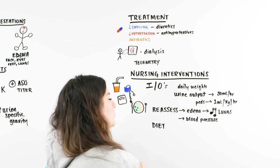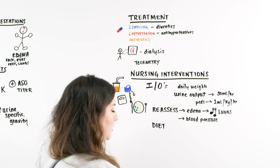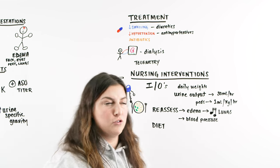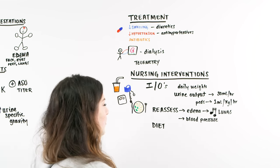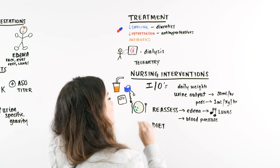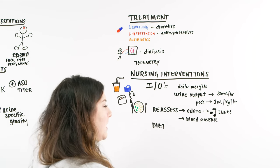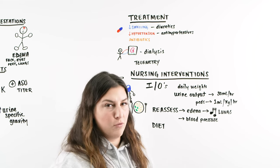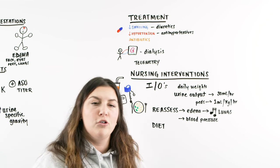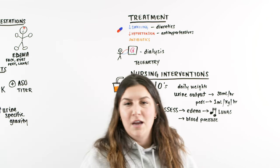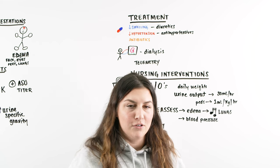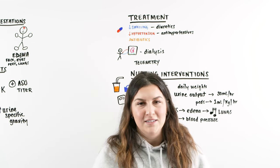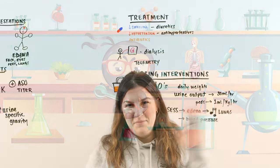We're reassessing and listening to the lungs, checking telemetry, and making sure their diet is appropriate — because all of this is going to help us get this patient back. We can reverse this glomerulonephritis if we treat it correctly. But if it goes on for too long, there could be irreversible kidney damage. I hope you learned something from this video, Ninja Nerds. Until next time.